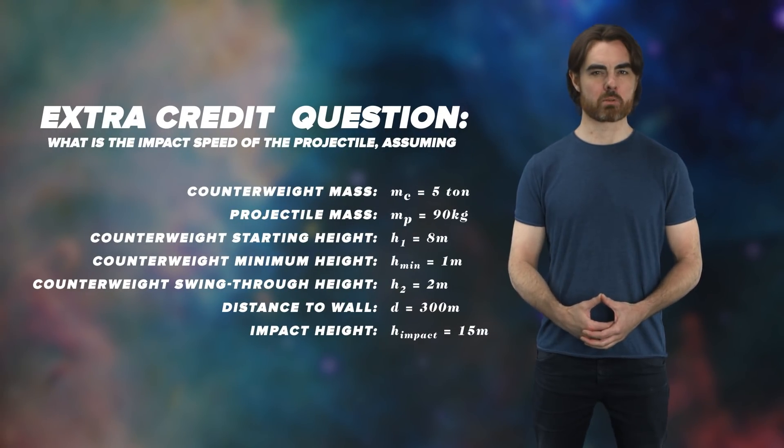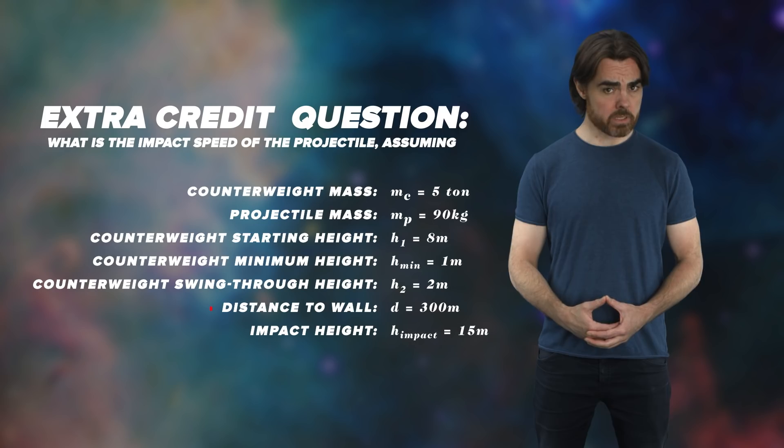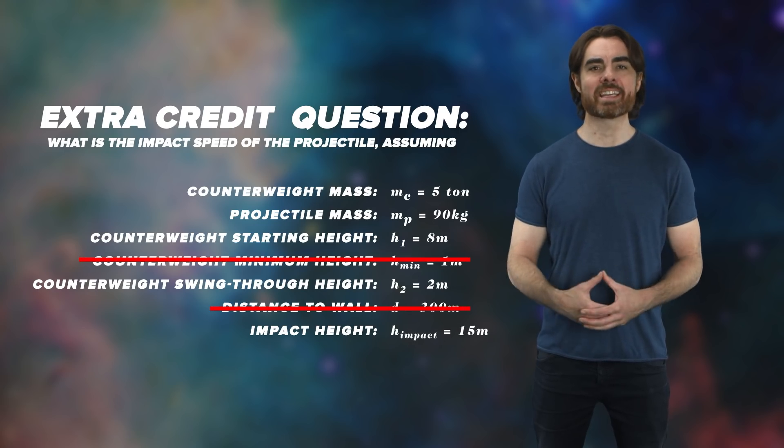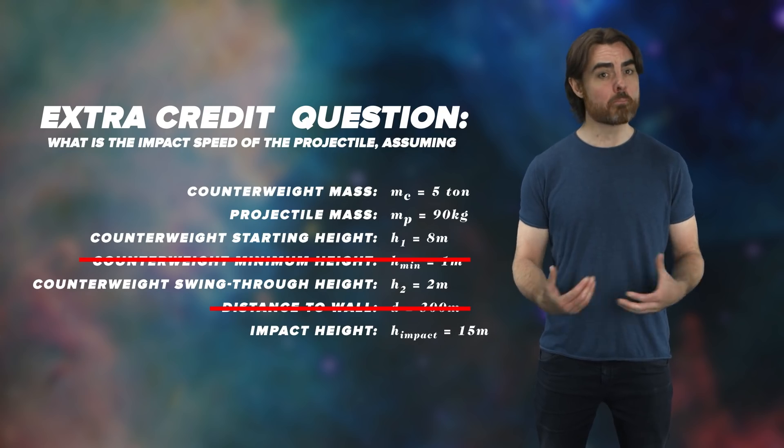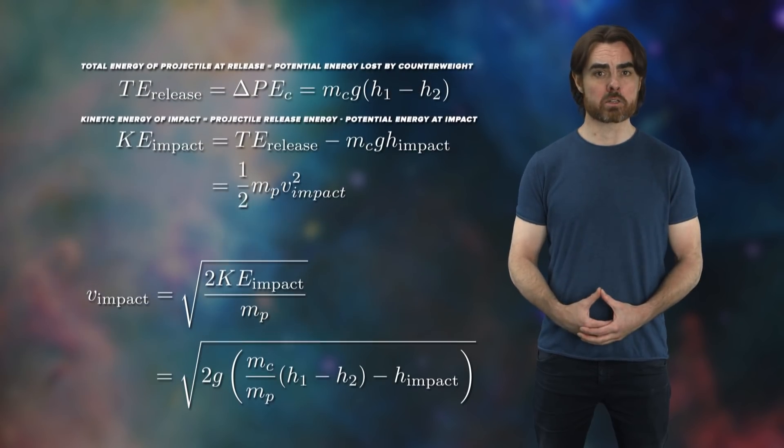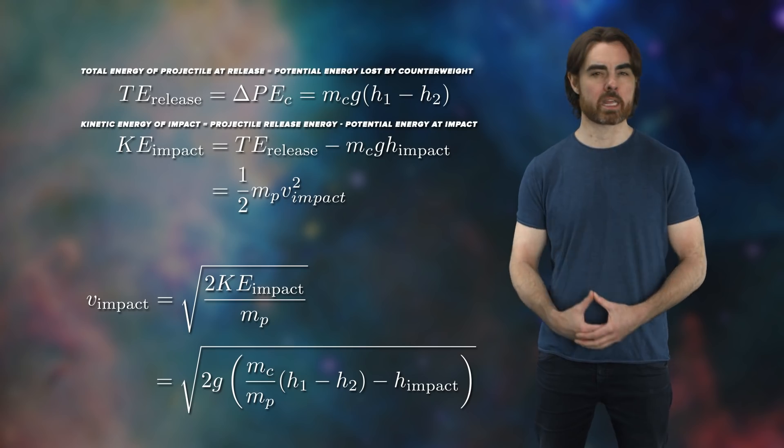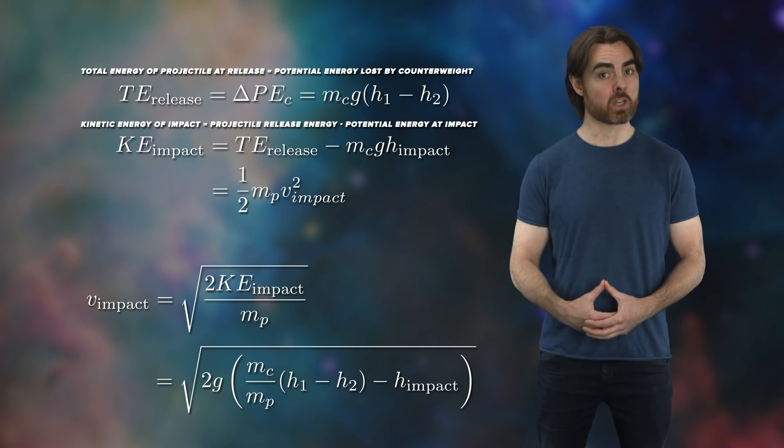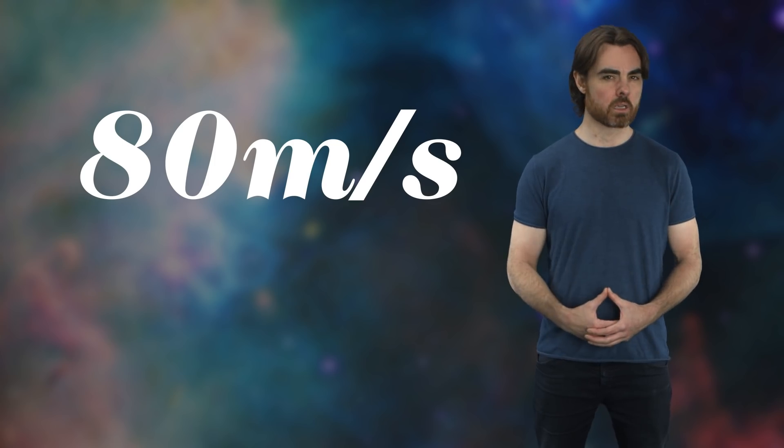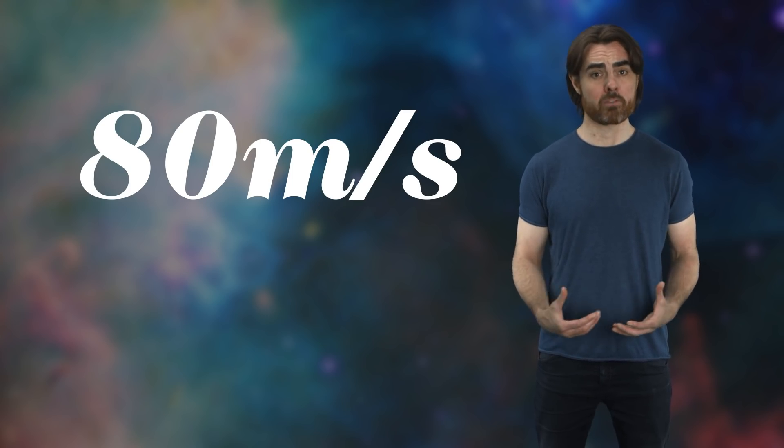Okay, for the extra credit question, I asked for the speed of impact of the projectile, assuming the parameters you see on screen now. Some of these were red herring parameters. The only things you needed to know were the starting and final heights of the counterweight and projectile, and the mass of the counterweight and projectile. This is the power of using energy in calculations. So many irrelevant complications melt away. Like I just explained, we can equate the energy lost by the counterweight with the energy gained by the projectile. Then subtract the potential energy of the projectile at its point of impact, and we have its kinetic energy. Then half mb squared gives us its velocity around 80 meters per second. The kinetic energy of a 90 kilogram stone at that speed is about that of a third of a stick of dynamite. Hey, it's not bad for a medieval rock slinger.